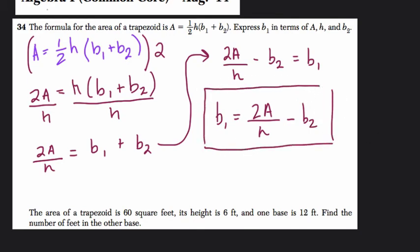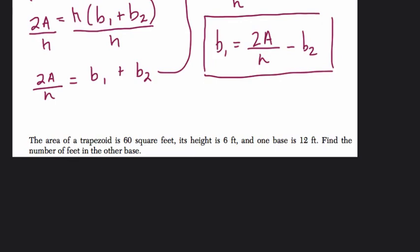Now in the second part of the question, what do they say? Well, they say that the area of the trapezoid is 60 square feet, so they're giving us the area. So A, and I like to write these out as I go so I don't lose track of them, equals 60 feet. Height is 6 feet, so H is 6 feet.